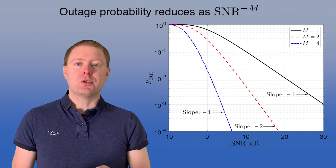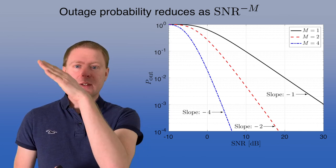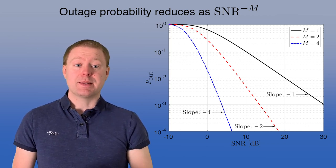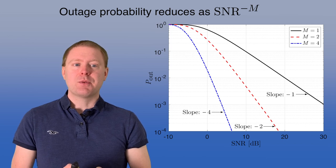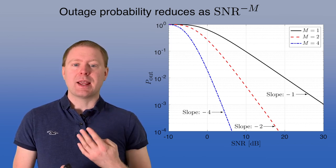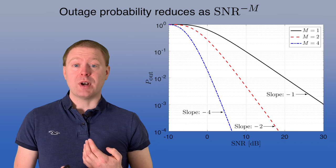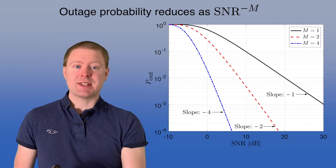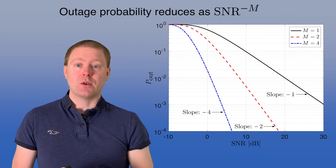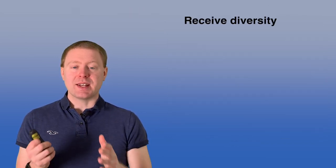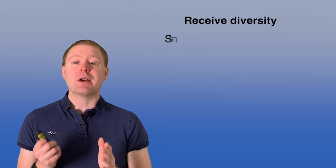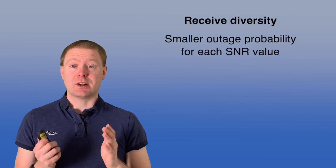If we go up to 2 receive antennas, we get the red curve, which has a better slope. It goes down as minus 2 in this log-log scale. And if we go up to 4 receive antennas, we get a diversity gain of order m and then the curve goes even steeper down as 1 over SNR to the power of m. So the receive diversity achieved in the SIMO system with m antennas is very effective to reduce the probability of outage in the communication system in Rayleigh fading.